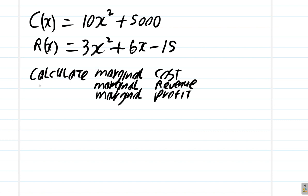Given the total cost is 10x squared plus 5000, we find the marginal cost by differentiating. So C prime of x, the derivative of C(x), is 20x.